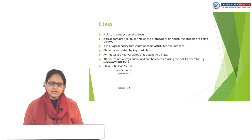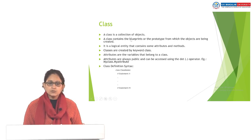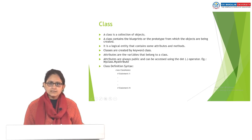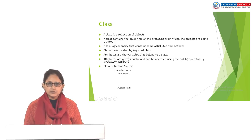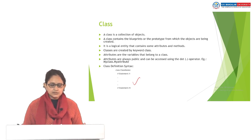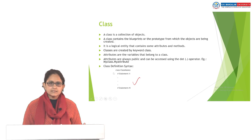We'll start with the class. A class is a collection of objects. A class contains the blueprint or the prototype from which the objects are being created. It is a logical entity that contains some attributes and some methods. We can create a class by using the class keyword. We have attributes and a set of methods within the class. This is the general syntax for how we can create a class in Python.